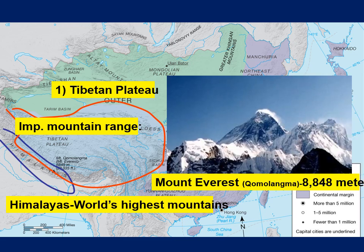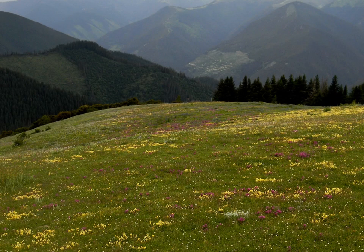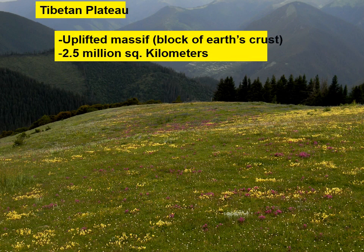Mount Everest is the world's tallest mountain above ground — there is actually a larger mountain that is partially submerged in Hawaii. The Tibetan Plateau was formed when the Indian plate crashed against the Eurasian plate, lifting up part of the Earth's crust. The Tibetan Plateau is that piece of lifted crust, called a massif, and it covers 2.5 million square kilometers.